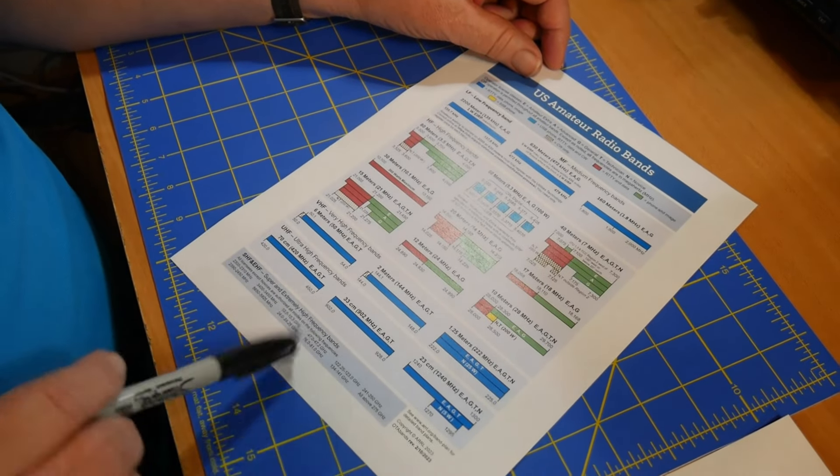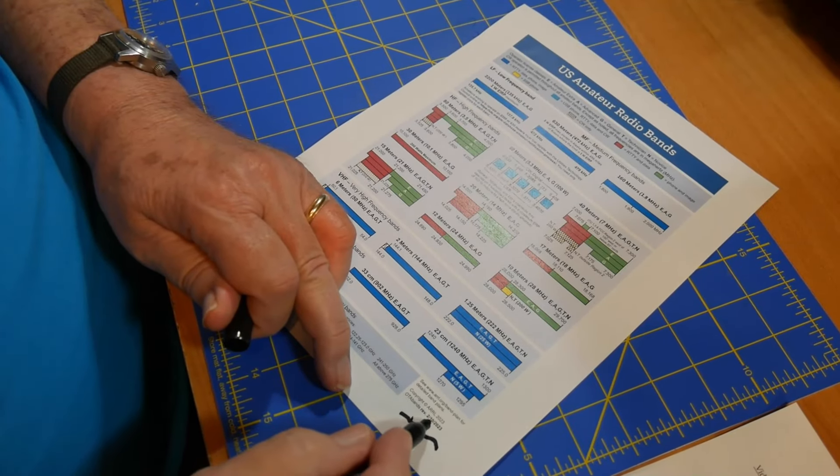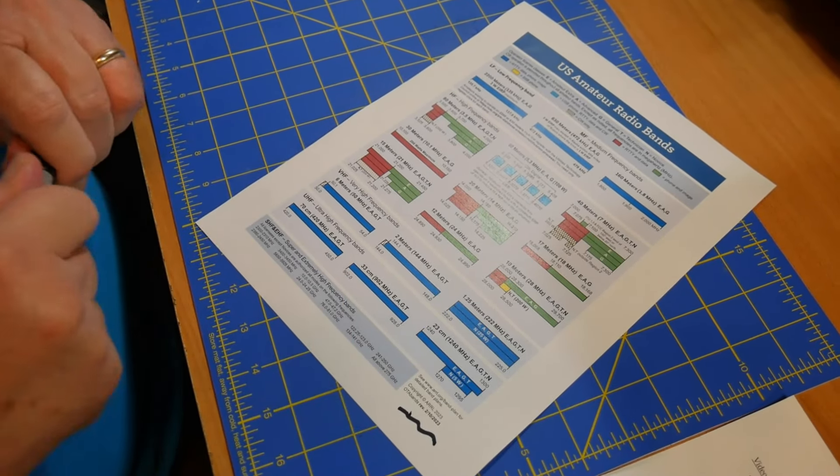This chart comes from the American Radio Relay League and is the band allocations for the different classes of amateur radio license. You'll see some things on here that are a little bit maybe odd. It talks about the novice license, which no longer exists, but people who have them can renew them indefinitely. Similarly, the advanced class license no longer exists, and people who have them can keep renewing them, but nobody can get a new one. This one right here was created in 2023 and is the most recent.